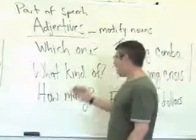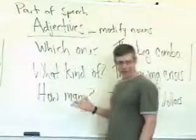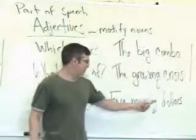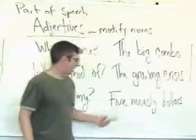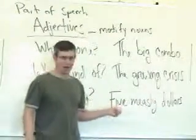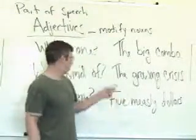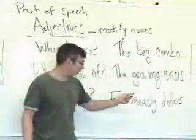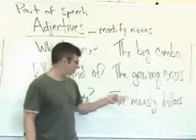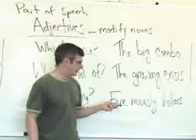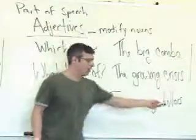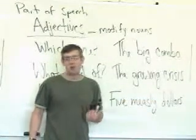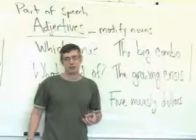Or, 'how many?' — five measly dollars. How many dollars? Five dollars. What kind of dollars? Measly dollars. 'Measly' is an adjective, 'five' is an adjective, and 'dollars' is a noun. So that's what adjectives are — they modify nouns.